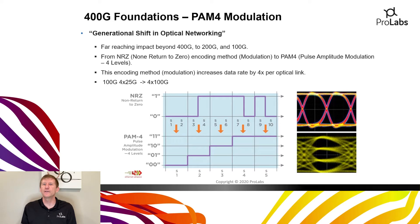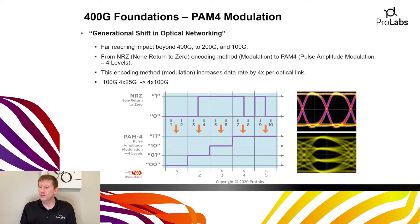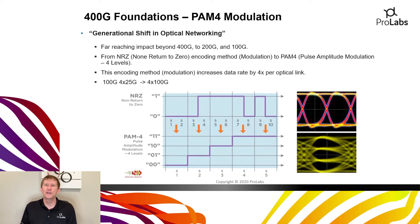PAM4 modulation is perhaps the biggest change with 400 gig that networks will encounter, compared to the 100 gig migration a few years ago. PAM4 is a generational shift in optical networking with far-reaching impact — it goes all the way to 200 gig and 100 gig and will impact each section of your network. Moving from NRZ encoding, which is a one-step up-and-down algorithm, to PAM4, which is a four-step encoding scheme, as demonstrated by the eye diagrams — two steps visible in the NRZ eye diagram versus all four steps in the PAM4 eye diagram.